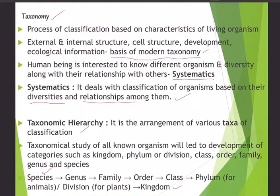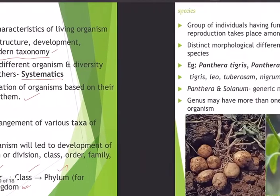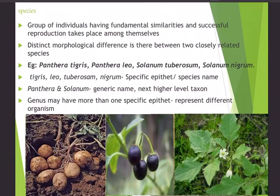Starting from the bottom: many species join together to form a genus; many genera form a family; many families form an order; many orders form a class; many classes form a phylum (for animals) or a division (for plants); and many divisions make up the kingdom — predominantly plant kingdom or animal kingdom.